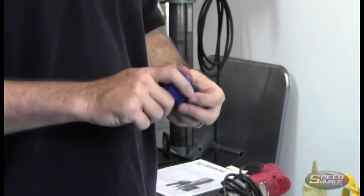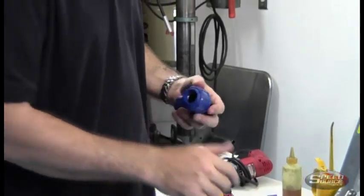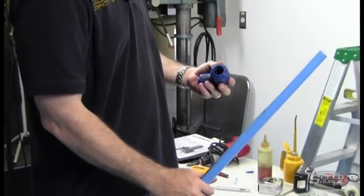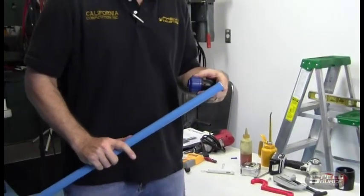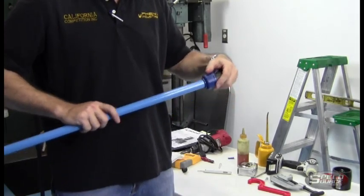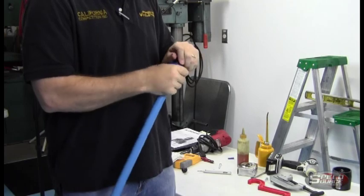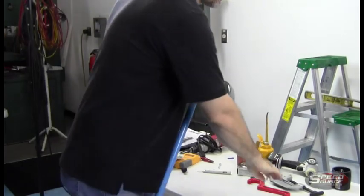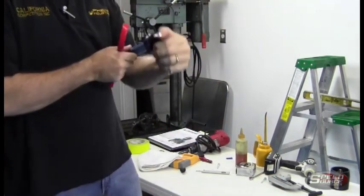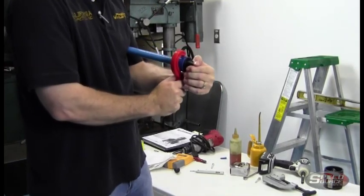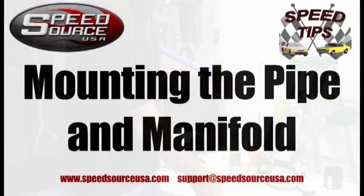Now you want to make sure that you don't tighten this down tight—leave it nice and loose. We've got our pipe here where the end has been prepped. Take it in; you can hear it bottom out. Now we're going to hand tighten it, and with our spanner, grab it and give it a good snug.